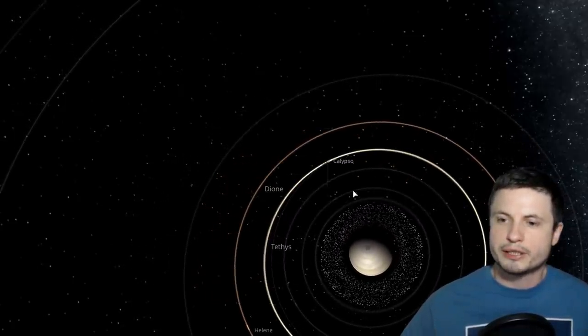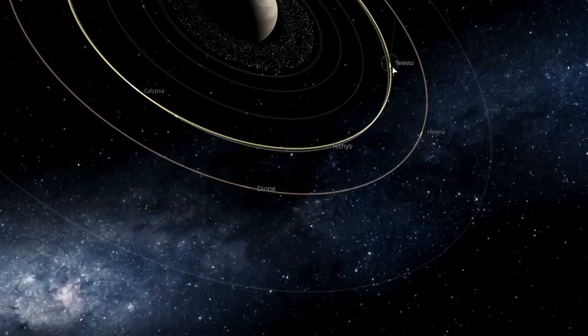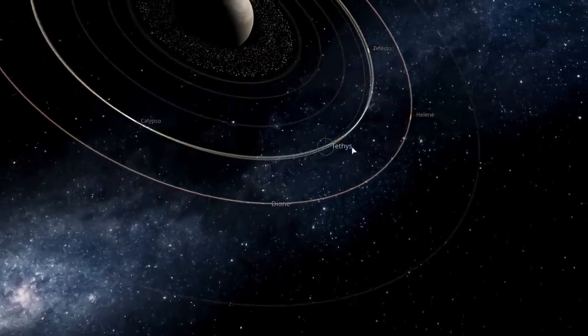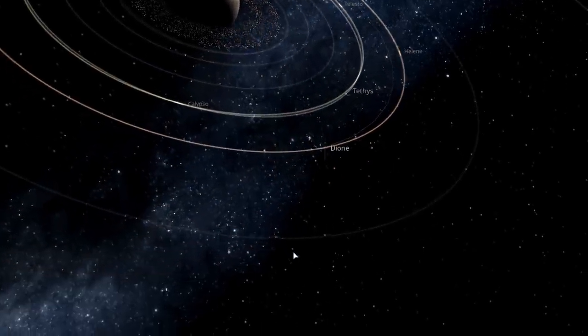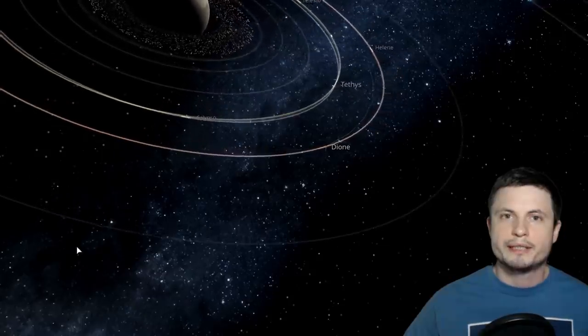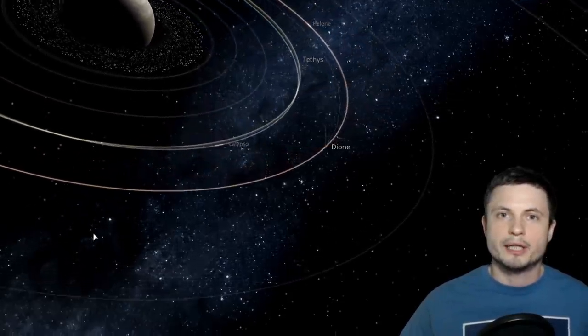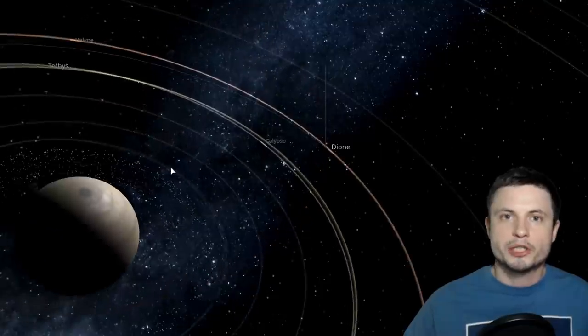Specifically here, you can kind of see that this moon right here, Telesto and Calypso, are the Trojans of the larger moon Tethys. And Helene here is the Trojan of the moon Dione. So they're all located in a kind of a 60 degree angle known as the Lagrange point. Specifically here, because these moons are in these positions, they're going to be in a really stable orbit around Saturn for a pretty long time.